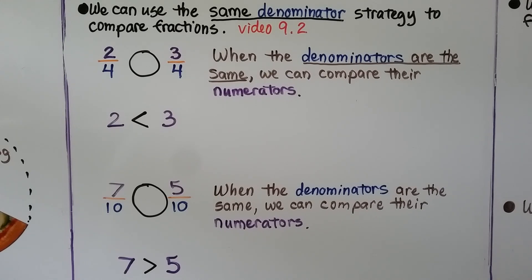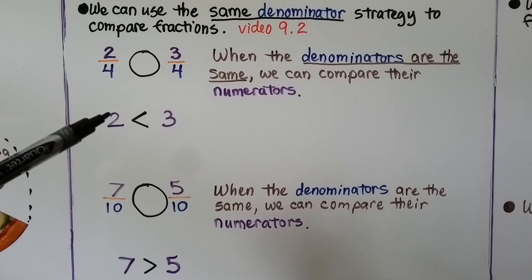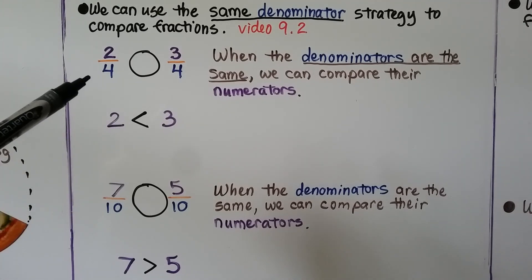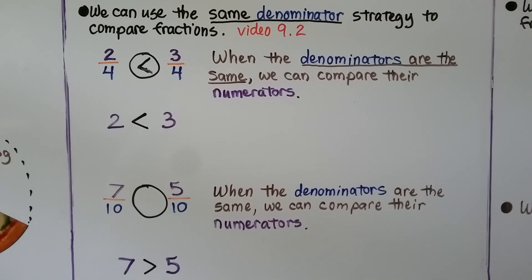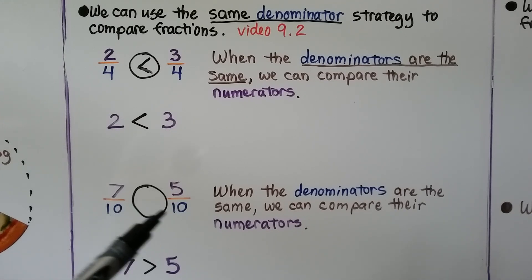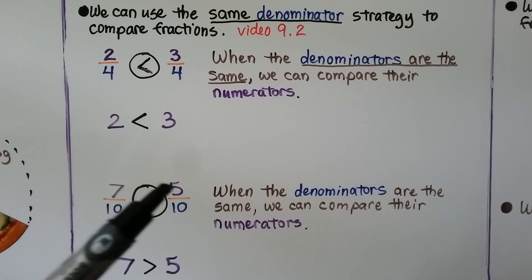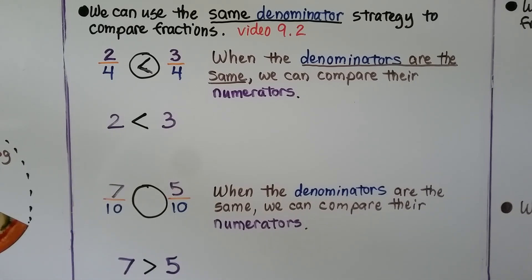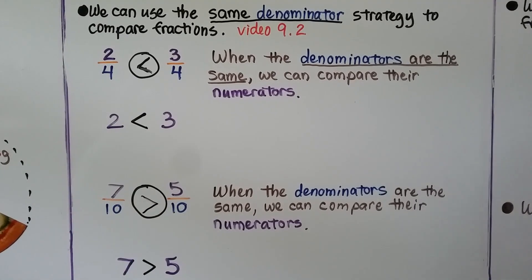We can use the same denominator strategy to compare fractions — we learned that in video 9.2. We want to compare two-fourths and three-fourths. When the denominators are the same — they both have a four for a denominator — we can compare their numerators. We have a numerator of two and a numerator of three. We know two is less than three, so two-fourths is less than three-fourths. Here we have seven-tenths and five-tenths — same denominator. Seven is greater than five, so seven-tenths is greater than five-tenths.